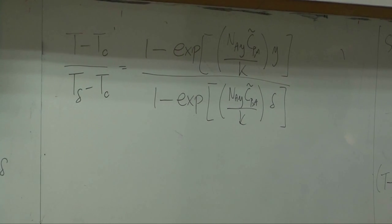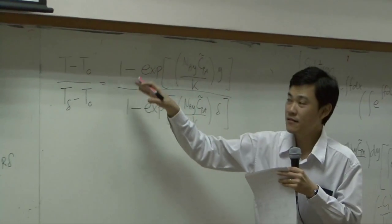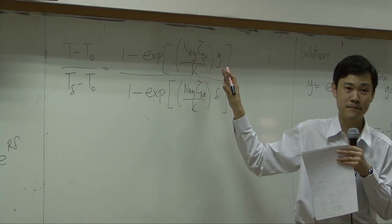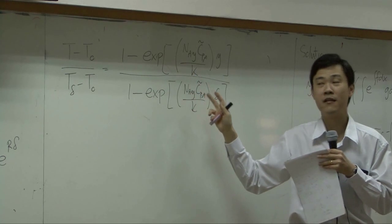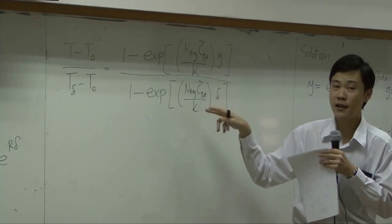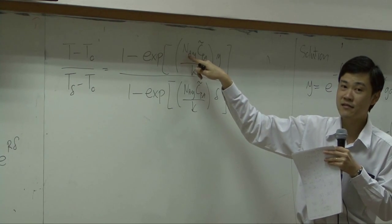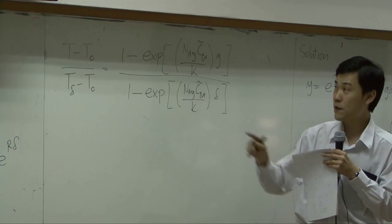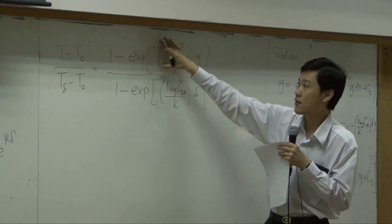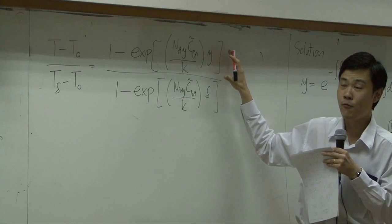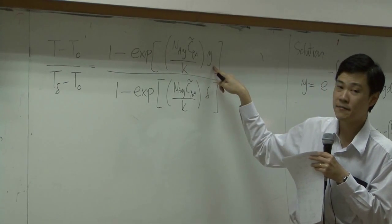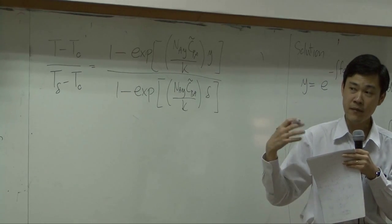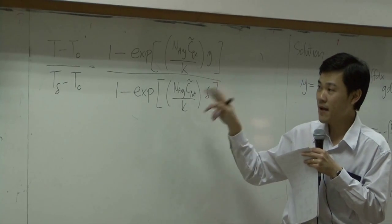Any questions? You should notice from here that the result of the temperature profile is nonlinear — very obvious. This is a nonlinear temperature profile, and the term that makes everything nonlinear is NA. As long as the mass flux is zero — if you have only one single species there'll be no diffusion, so NA becomes zero — this term will become one. So you have one minus y and one minus delta, and everything turns linear. As I said, the movement of molecules by diffusive energy transport makes the temperature profile nonlinear.